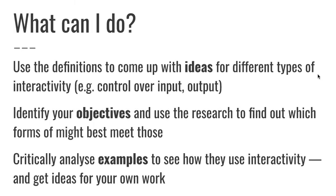In terms of practical steps: first, use the definitions to come up with ideas for different types of interactivity — having a list and generating ideas for each element can free up your imagination and give you more creativity. Second, consider what your objectives actually are. Why are you using interactivity? The first question is whether you should, and then use the research to find out which forms might be most appropriate. Finally, critically analyse examples of interactive storytelling using these concepts to identify the methods they use and the types of interactivity they decide not to use — you can get ideas from both best practice and bad practice to avoid.